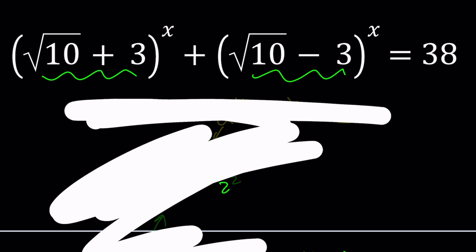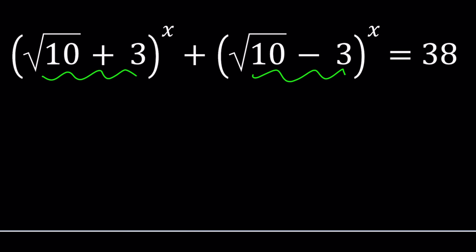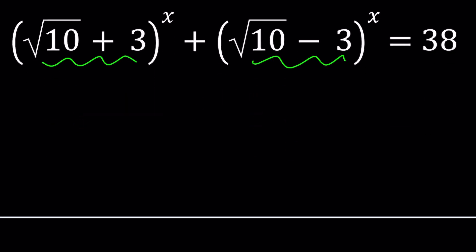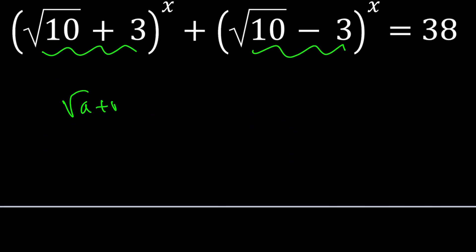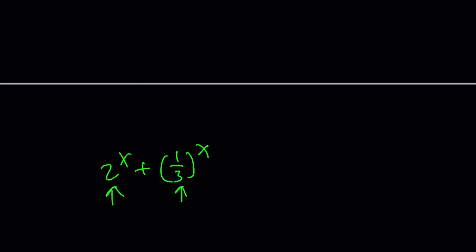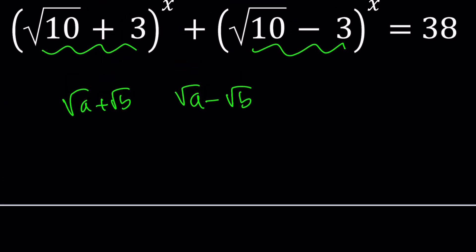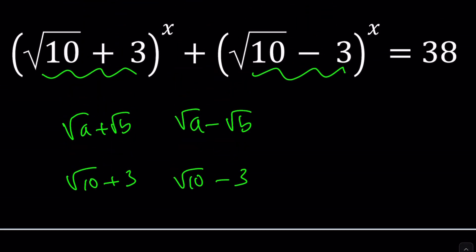First of all, notice that these are radical conjugates. What does that mean? Whenever you have something like square root of a plus the square root of b and the square root of a minus the square root of b, those are called conjugates. Why are they called conjugates? Because when you multiply them, you get a real number. Especially if you have something like square root of 10 plus 3 and square root of 10 minus 3, because square root of b is an integer, things are even better. So what happens if you take two conjugates and multiply from difference of two squares, you get rid of the radicals, which is what is nice about these scenarios.